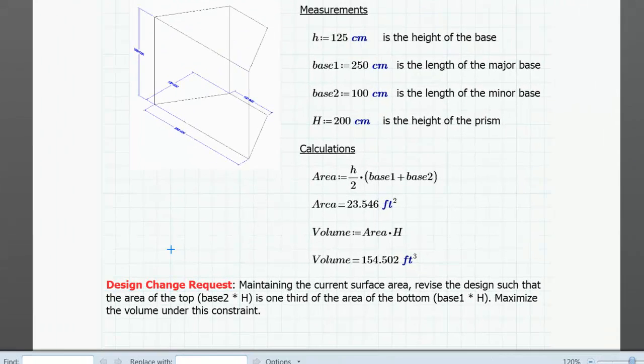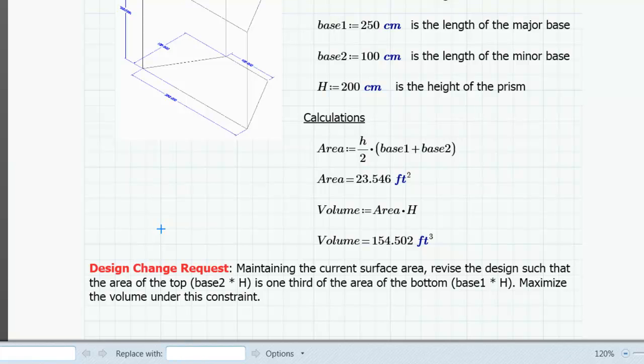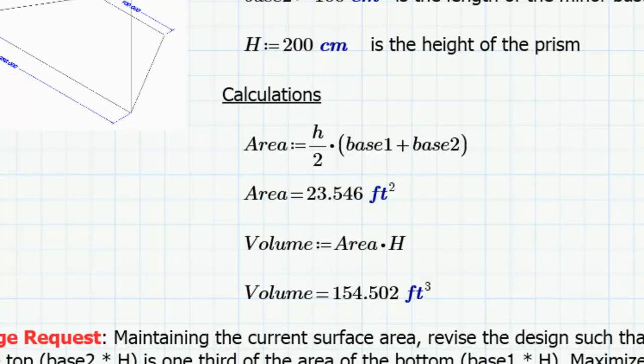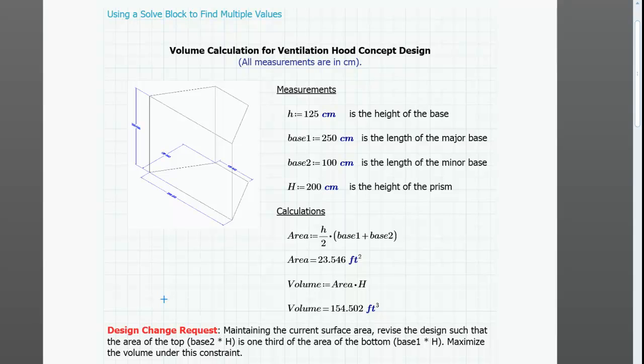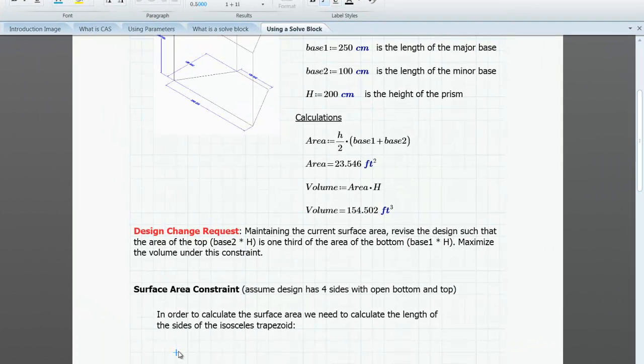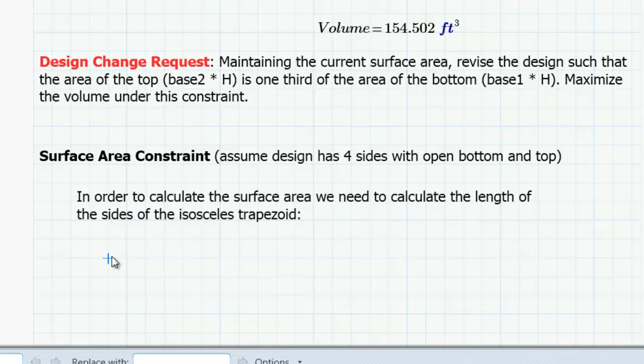The request says, maintain the current surface area, and revise the design such that the area of the top is one third of the area of the bottom, and maximize the volume under these constraints. Looking at what I've calculated so far, the first thing I need to do is calculate the surface area of the ventilation hood, so that I can use that as a constraint. The top and the bottom of the design are open, so I need to calculate the surface area of the four sides. Unfortunately, two of the sides are rectangles with an unknown measurement as one of the edges. Fortunately, the other two sides are isosceles trapezoids, and I can use the Pythagorean theorem to calculate the length of the unknown side of the trapezoid. Because I can dissect my trapezoid into a rectangle with congruent right triangles on each side, I can use h as one leg of a right triangle, and one half the difference between base one and base two as the length of the other leg. And I'm going to use these expressions in a definition that calculates l, the length of the side of the trapezoid. Once I know the length of this side, I can then calculate the surface area of the existing design, and establish a surface area constraint in my solve block. The other constraint will be, we'll set the area of the top of the hood equal to one-third of the area of the bottom of the hood.